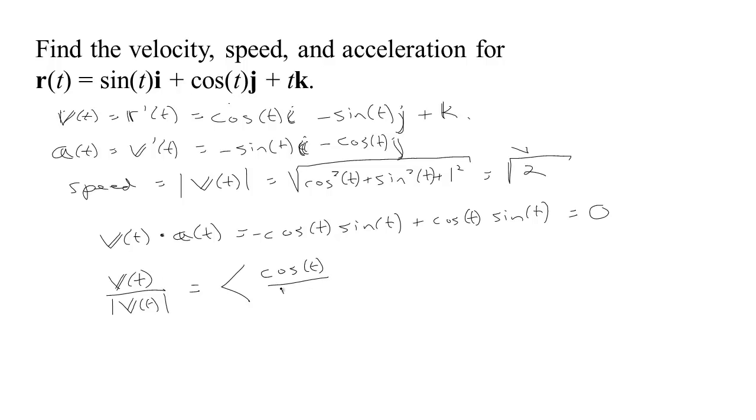then we have this vector value function. The first component is cos t over the speed, but the speed is this constant root 2, and we have minus sin t over the speed, which is root 2, and 1 over root 2. Notice that if you take this squared plus this squared plus this squared, you're going to get cosine squared plus sine squared over 2, that's 1 half plus another 1 half makes 1. So the square root of that will be 1. So we've got a unit vector now.